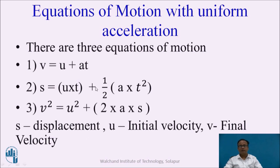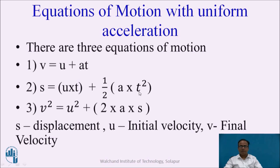Now let us consider the equations of motion with uniform acceleration. There are three equations of motion. The first one is v equals u plus a·t. The second is s equals u·t plus half·a·t². The third equation is v² equals u² plus 2·a·s, where s is displacement, u is initial velocity, v is final velocity, and t is the duration of the body in a particular motion.